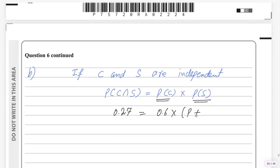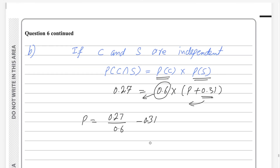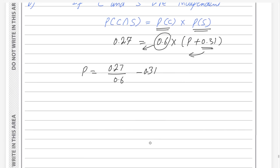P plus 0.31. In the next step, rearranging the equation: P will equal 0.27 divided by 0.6, then subtract 0.31. Using a calculator, the answer of P is 0.14.